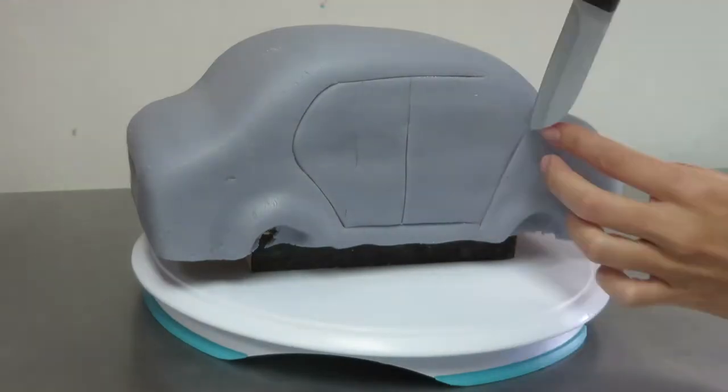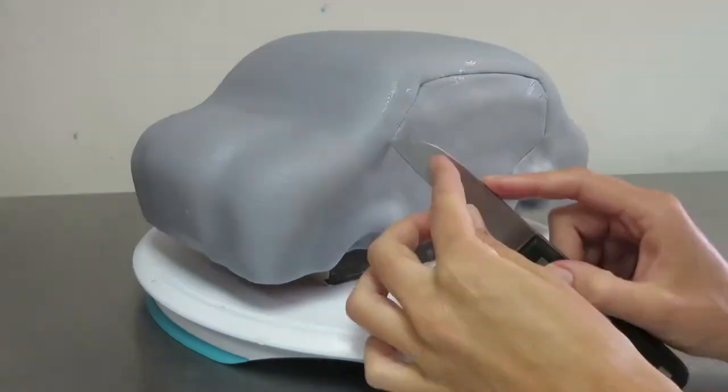I'm using a sharp knife to indent the fondant where the doors go. And now I'm adding the windows.